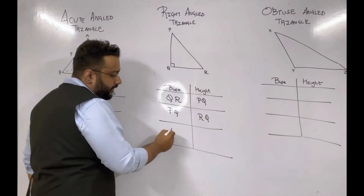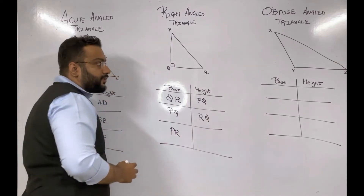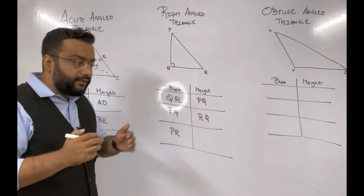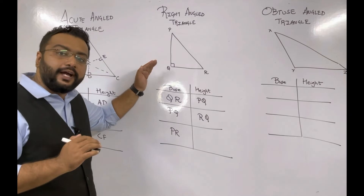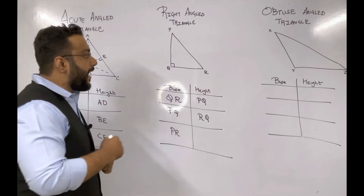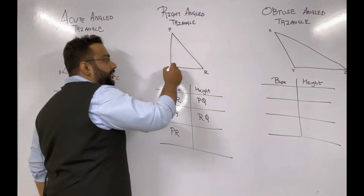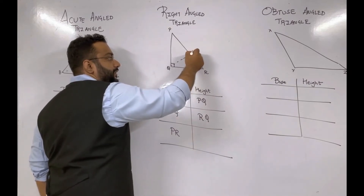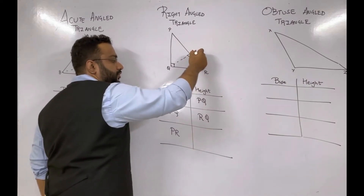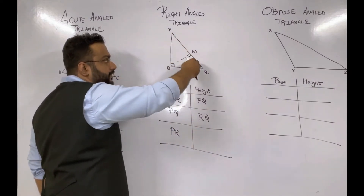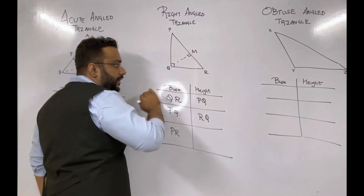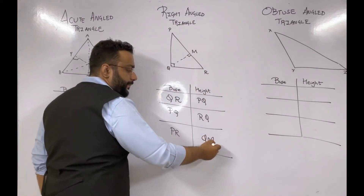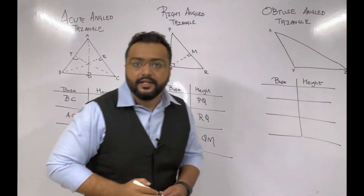Now for the last side PR as the base, the opposite vertex is Q. There is no perpendicular already drawn from Q, so we draw one and name the foot M. For base PR, the corresponding height is QM.